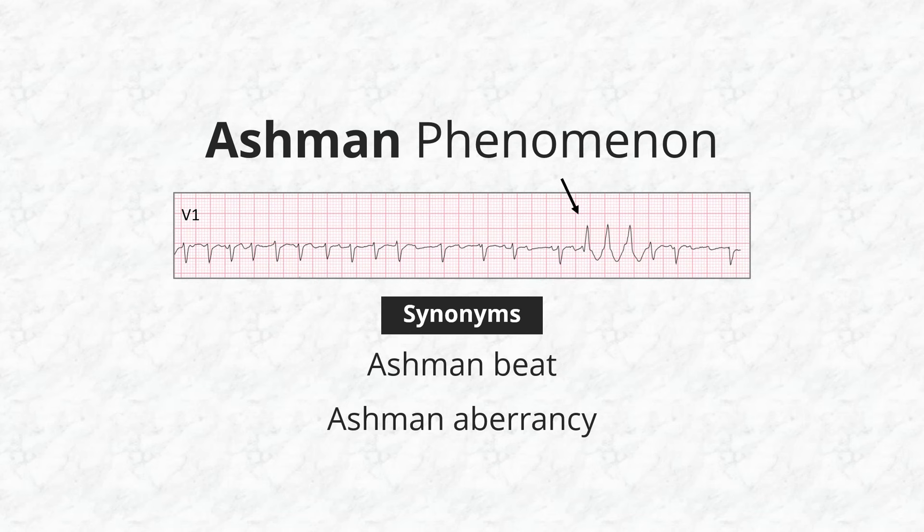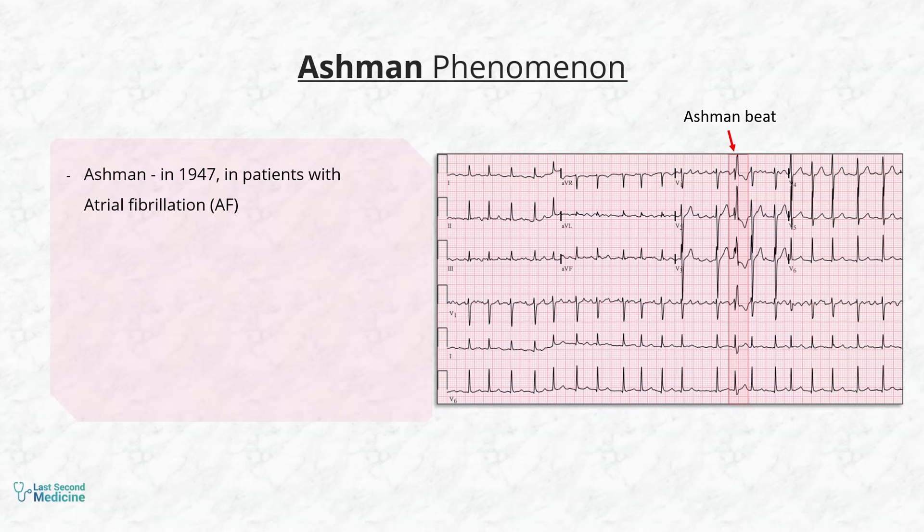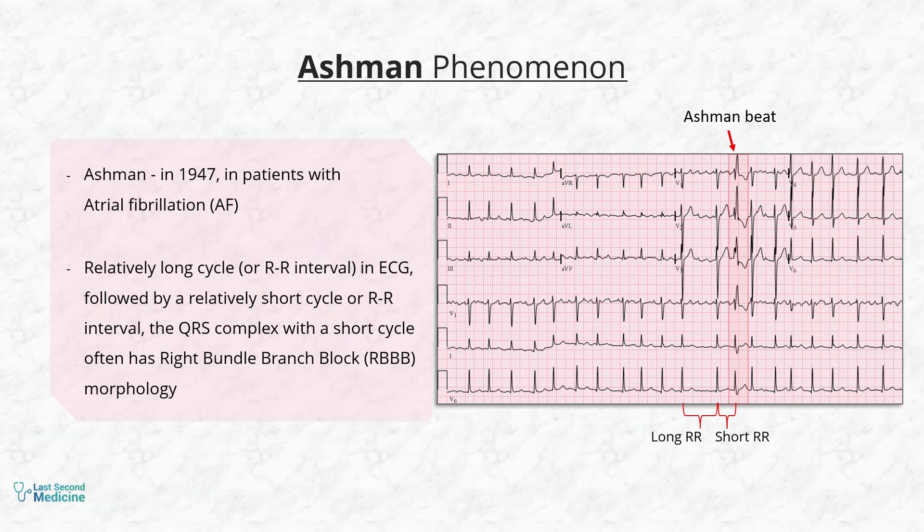This phenomenon was described by Ashman in 1947 in patients with atrial fibrillation. It was detected when a relatively long cycle or R-R interval in ECG was followed by a relatively short cycle or R-R interval.